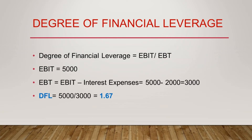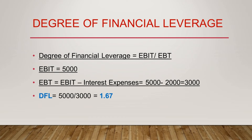Let's move forward to Degree of Financial Leverage. The formula is EBIT divided by EBT. We calculated EBIT as $5,000. To arrive at EBT we deduct interest expenses from EBIT — as the name implies, Earnings Before Interest and Tax minus interest gives Earnings Before Tax. So EBIT ($5,000) minus interest expenses ($2,000) gives EBT of $3,000. Applying the formula: $5,000 / $3,000 = 1.67 — that is our Degree of Financial Leverage.